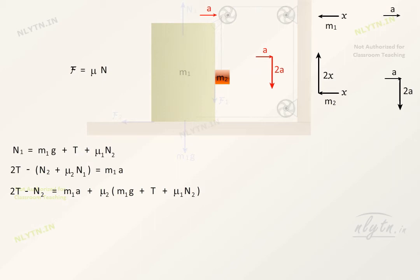Now, for m2, we have tension from the rope, friction between m1 and m2, normal reaction between m1 and m2, and weight of m2. So, writing equations, we get m2g minus T minus μ1N2 is equal to m2 into 2a and N2 is equal to m2 into a.